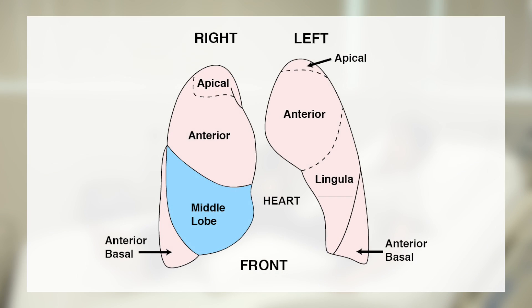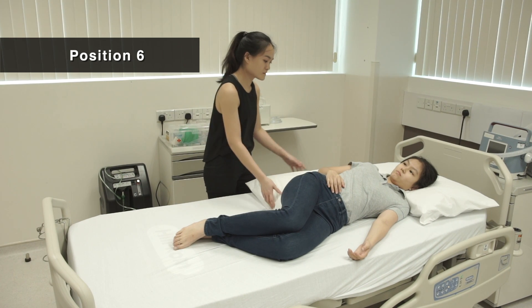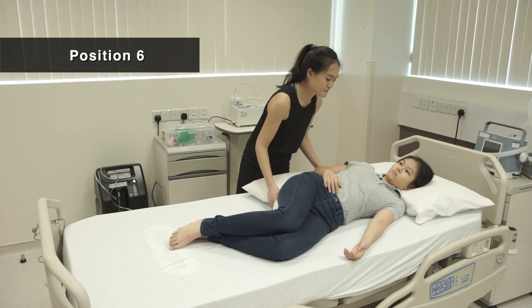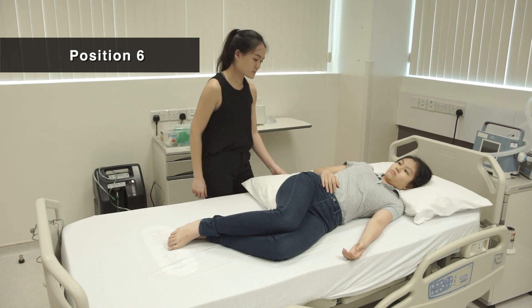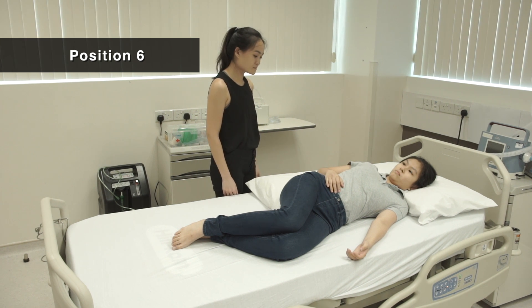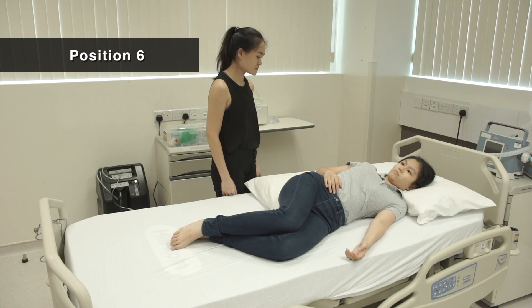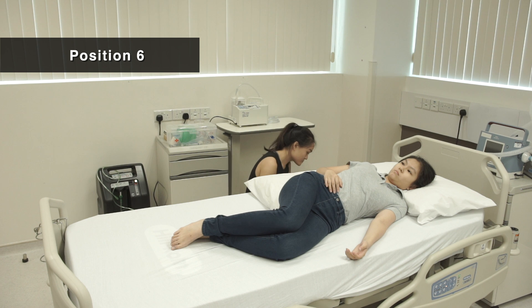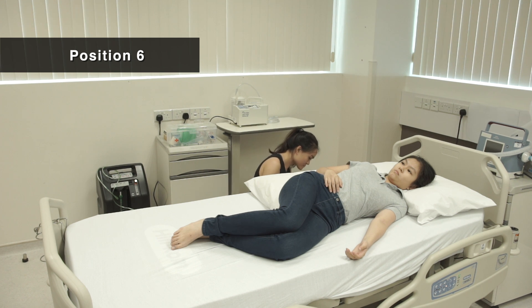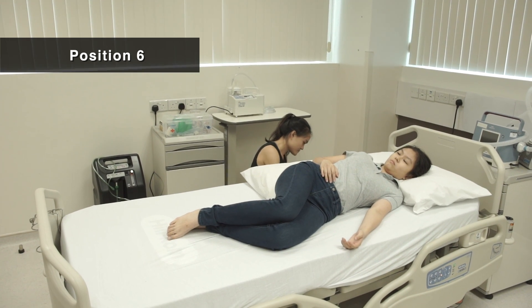Position 6 is for secretion at the middle right lungs. Lie on the left side with knees bent. Place one pillow behind the back. Rotate the body slightly backwards. Elevate the foot of the bed 15 degrees.